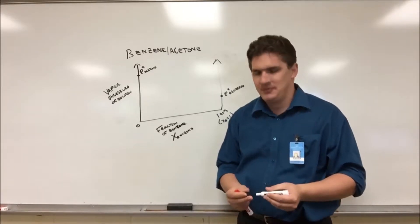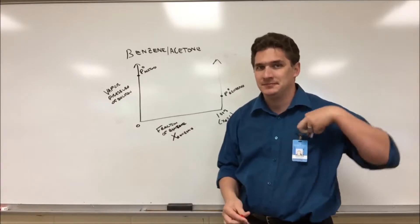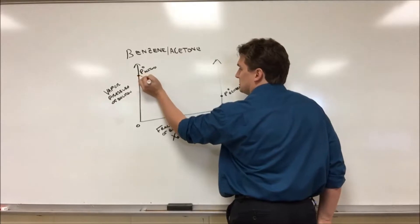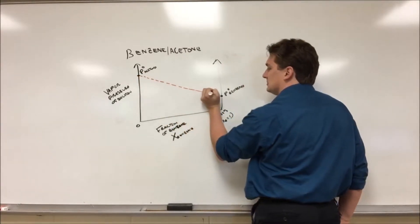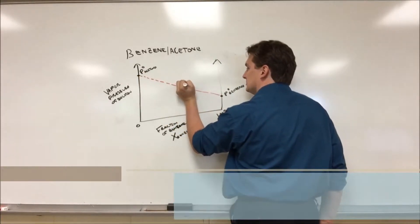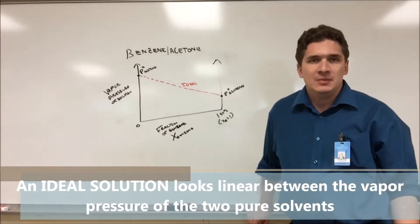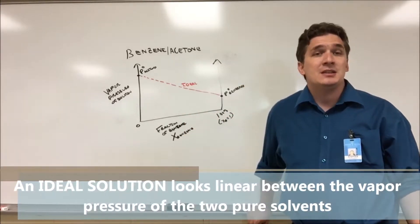So there are three ways this graph can look. The first and the easiest is what's called an ideal solution. It's a straight line. So an ideal solution, if it's a straight line, is basically going to say that the vapor pressure is a linear combination of their individual vapor pressures.